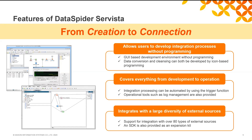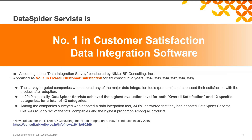The second feature is that it has full functions covering development to operations. After creating an integration process, execution can be automatically done. Operation tools are equipped by default, such as log management, which is needed for managing integration processing. The third feature is that it can integrate with a large diversity of external sources. DataSpider currently supports more than 80 systems to connect with. In recognition of DataSpider Savista's unique features and functions, we are ranked as the number one data integration software in overall customer satisfaction in a survey conducted by Nikkei BP Consulting, and we have been ranked number one for six consecutive years.